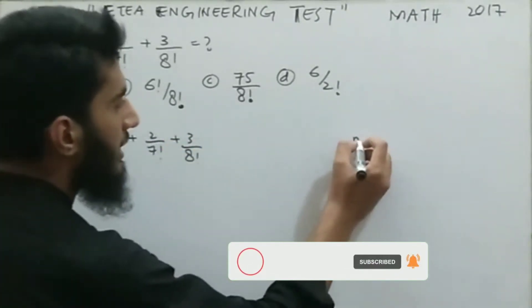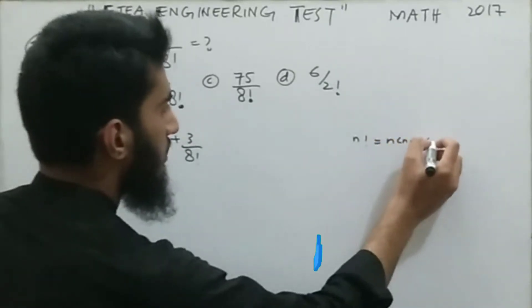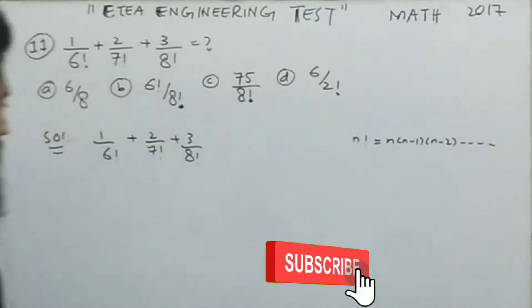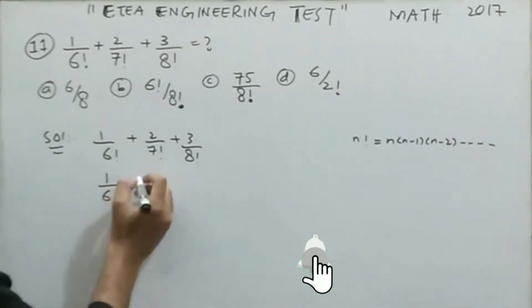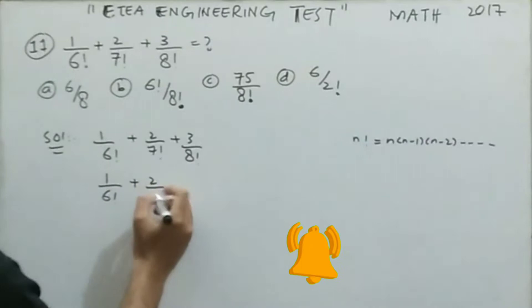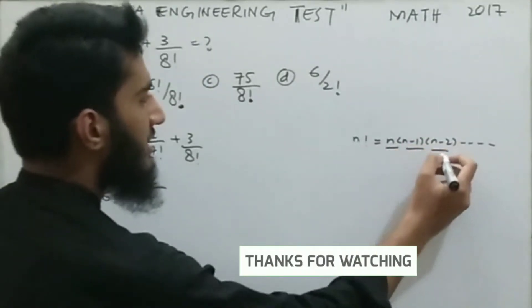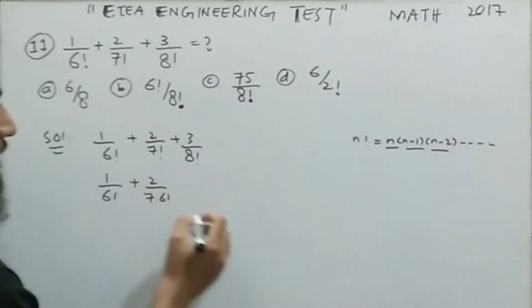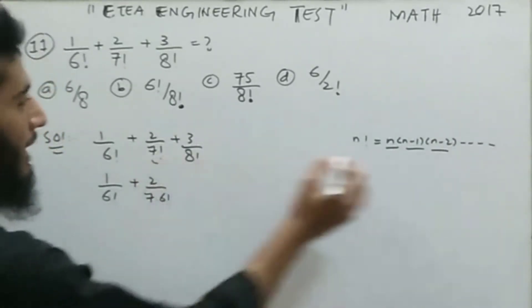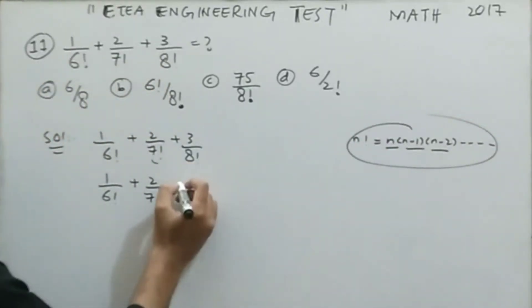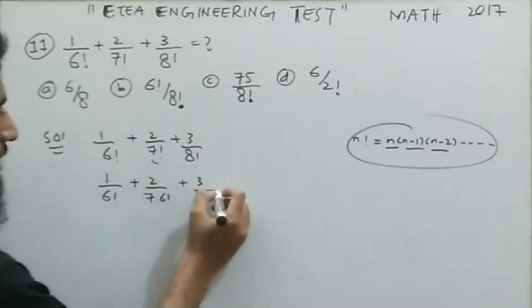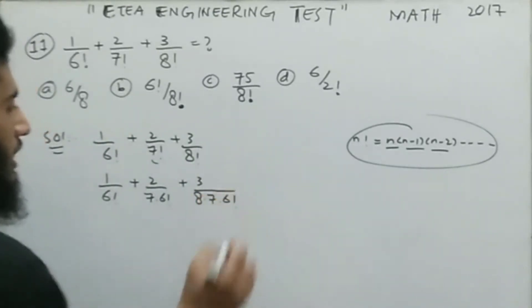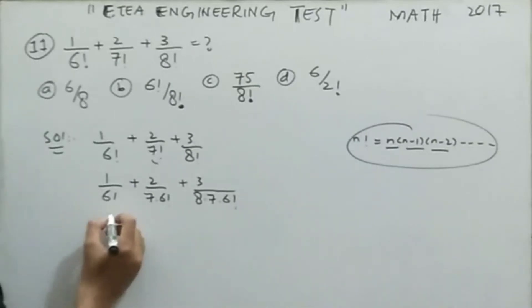You know that n factorial is equal to n into (n−1) into (n−2) and so on. So 1 over 6! remains as is. Then 7 factorial can be written as 7 × 6!, and 8 factorial in the denominator of the third term can be written as 8 × 7 × 6!.